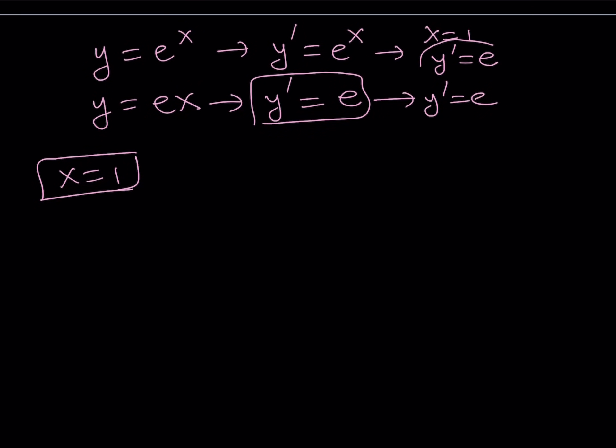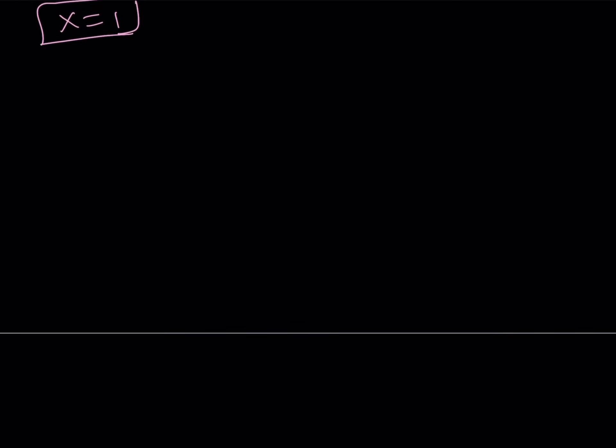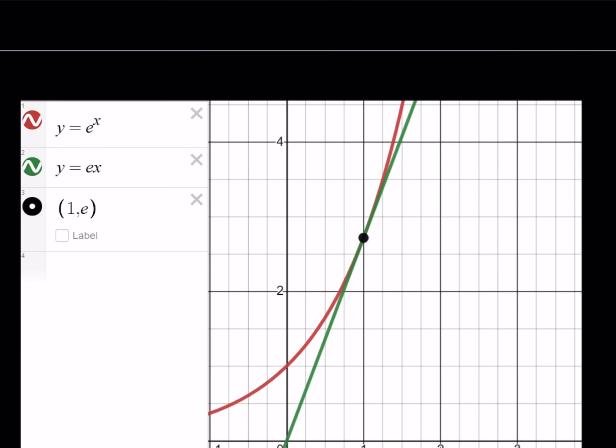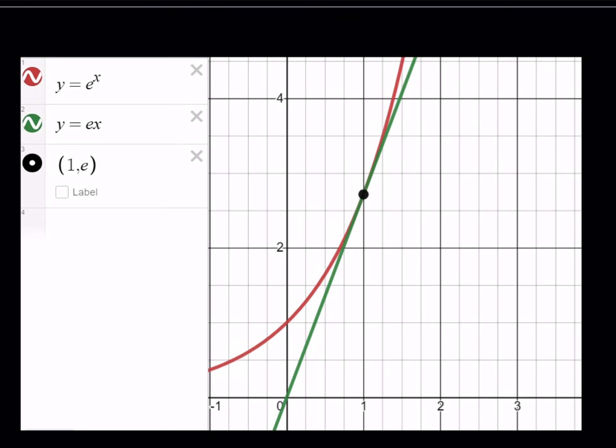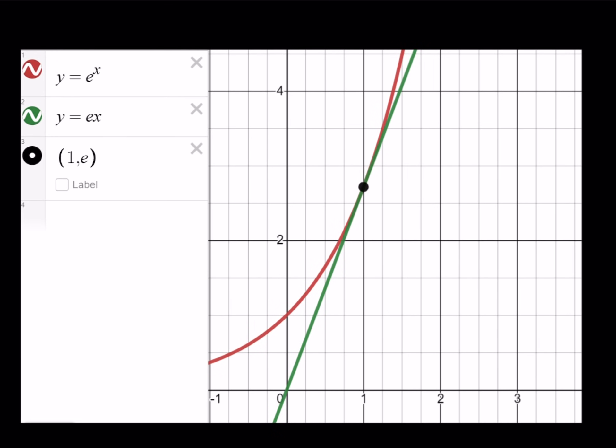So we have a situation where these two functions have the same value at their first derivative at the same point. Which means that they have a common tangent. But guess what? One of the graphs is a linear function. Therefore, it is the tangent line itself. Which means that y equals ex is going to be tangent to y equals e to the power of x at x equals 1. Which means that they're only going to have one intersection point. And that is going to be the solution.